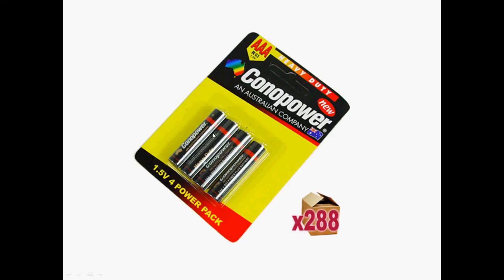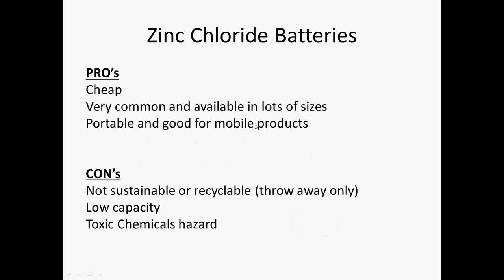You get them in a large range of sizes: triple-A, double-A, C cell, D cell, whatever. The problem with them is they don't last very long and they're only really good for low power devices. You might use them in a remote control for a television — the sort of thing you never really have to change the batteries on. Chances are you've got zinc chloride batteries in your TV remote.